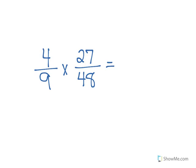I usually start with my first numerator, four. Is there anything that can divide into four and nine? No, there are no common factors. What about four and 48? Yes, I can divide them both by four. So I'm going to cross it out and do the division in my head — four divided by four is one, so this becomes a one.